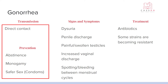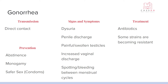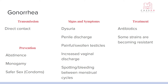Gonorrhea is again direct contact with the same type of prevention. Signs include dysuria in both men and women, some discharge, and for men painful and swollen testicles. For women there can be spotting and bleeding between periods. Treatment is antibiotics; however, some strains are becoming resistant. It's really important to take the medication as prescribed and ensure your partner does too in order to stop those resistant strains. This bacteria can also be passed to a baby during birth, so it's important that pregnant women get treated, as it can cause blindness and problems for babies during delivery.